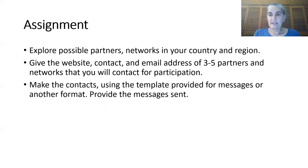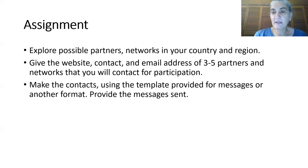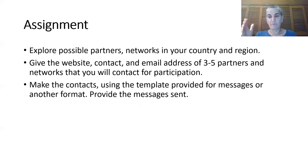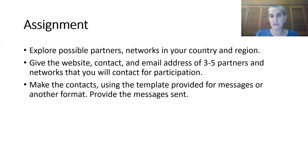Your assignment for this section is to explore the partners and networks in your country and region. Get out there, search around on the Internet, and see what you can find. Give us the website, the contact person, and an email address of three to five potential networks or partners that you will contact for participation. If you're a chapter in development right now, you may wait until after your officers are instituted to make actual contact — but draft an email using that template showing what kind of message you would send to each of those organizations, and give them to us so we can see that you're ready to go when the time is right.